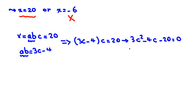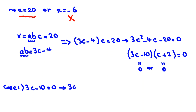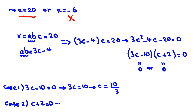I prefer to factorize 3c² - 4c - 20 = 0. Trying factors: (3c - 10)(c + 2) = 0, since -10 × 2 = -20 and -10 + 3×2 gives -4c. So either 3c - 10 = 0 giving c = 10/3, or c + 2 = 0 giving c = -2.